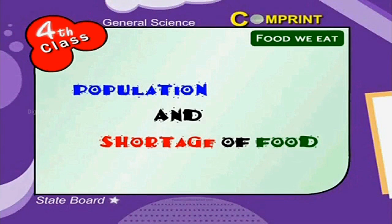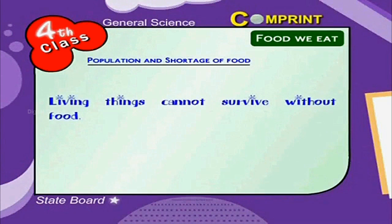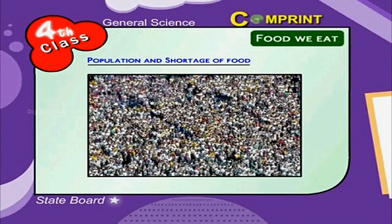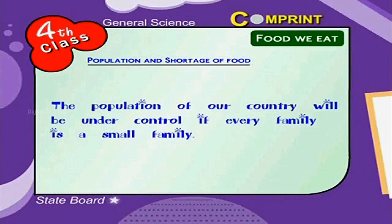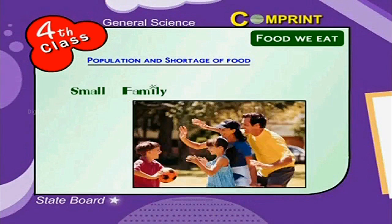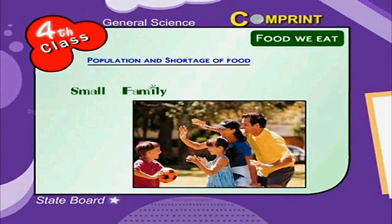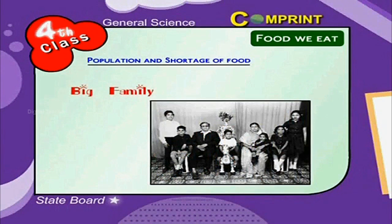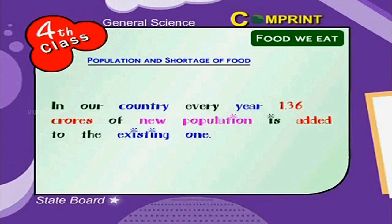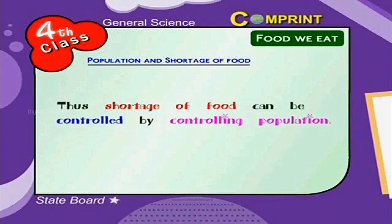Living things cannot survive without food. As population increases, shortage of food occurs. A small family with one or two children can look after children well and give them nutritious food. A big family with three or four children may not be able to provide nutritious food for all. In our country, every year 1.36 crore new people are added to the existing population, causing a shortage of food.